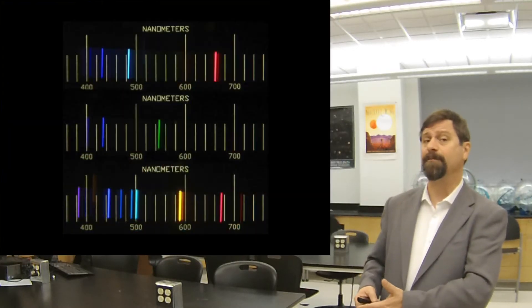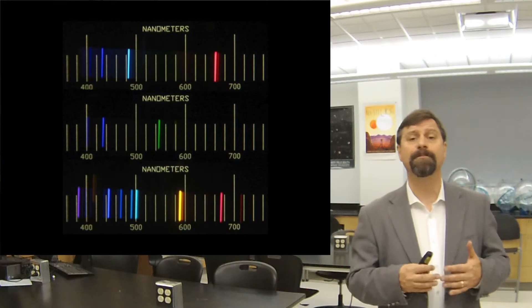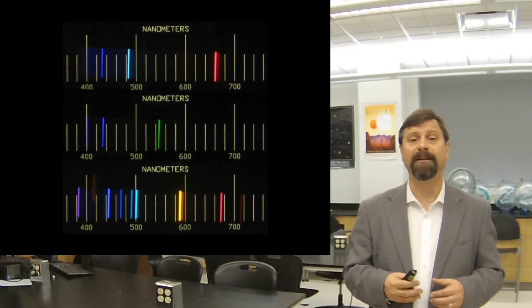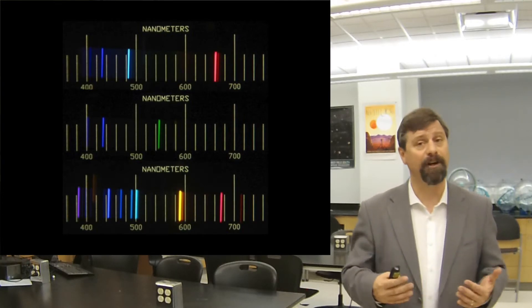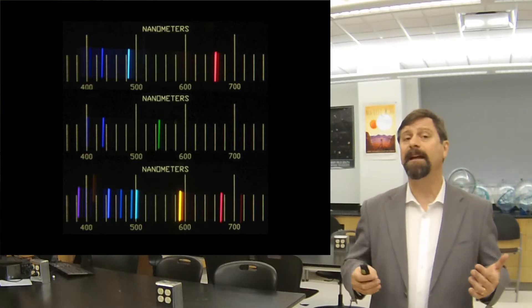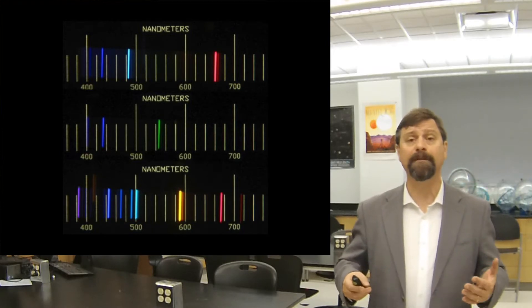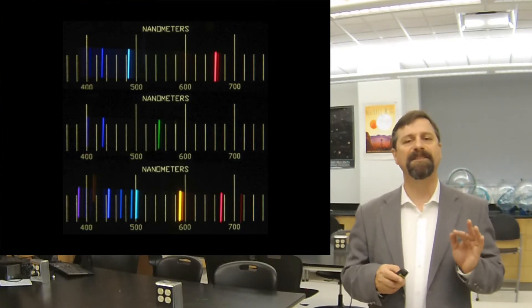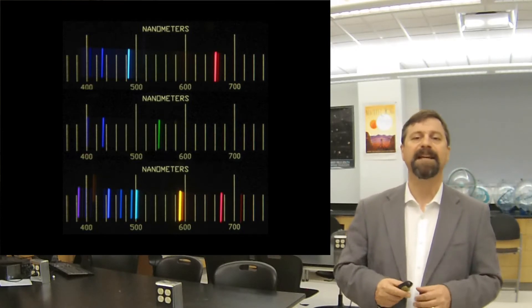There is also a different kind of spectrum where there's bright emission on top of a dark background. Perhaps the material is not emitting light at all frequencies — maybe it's emitting light only at specific frequencies.